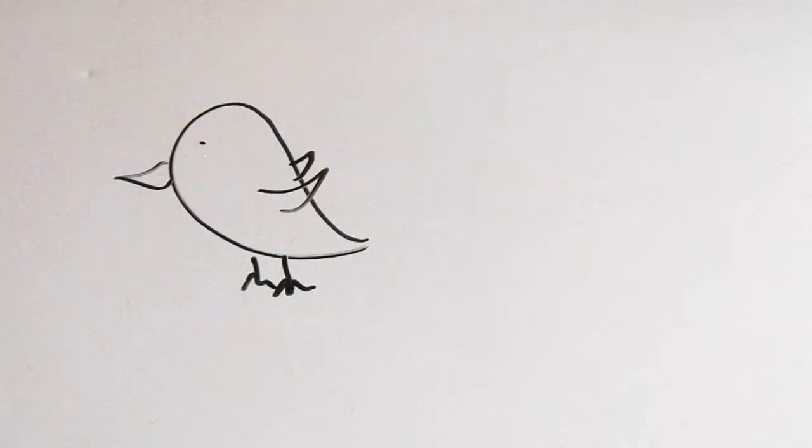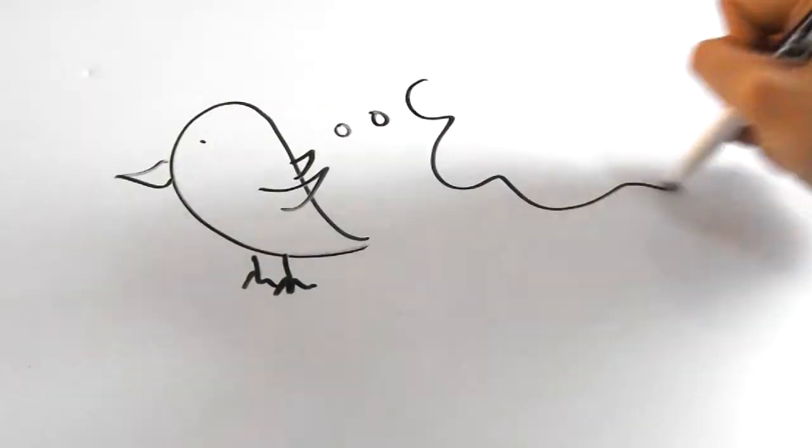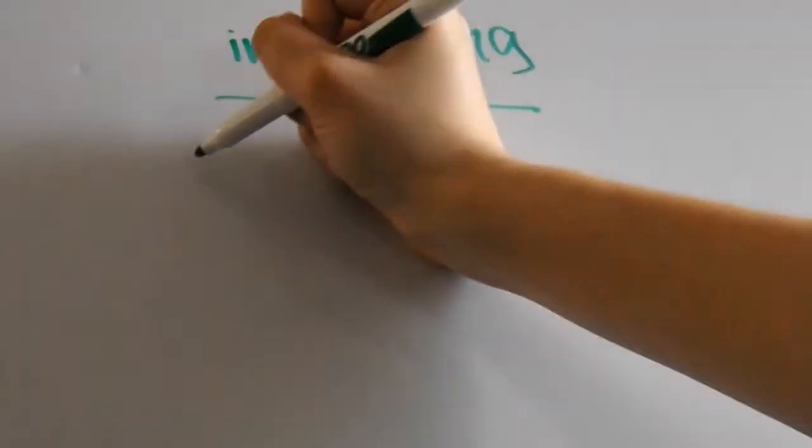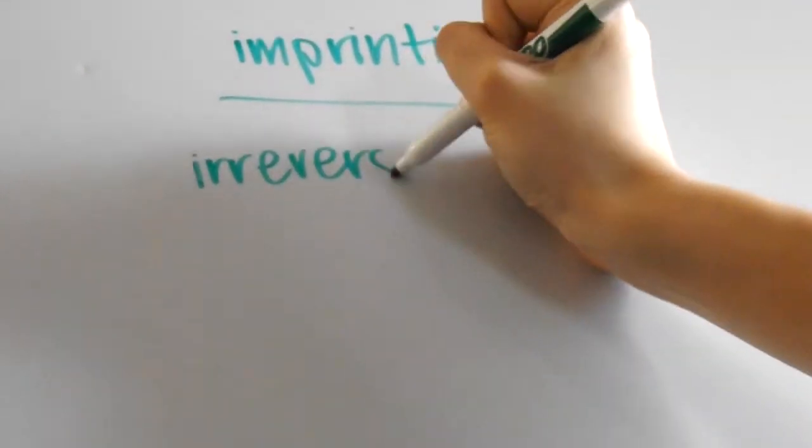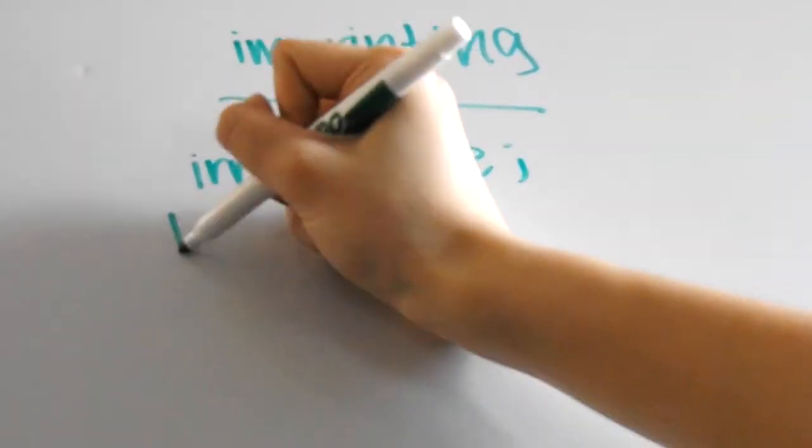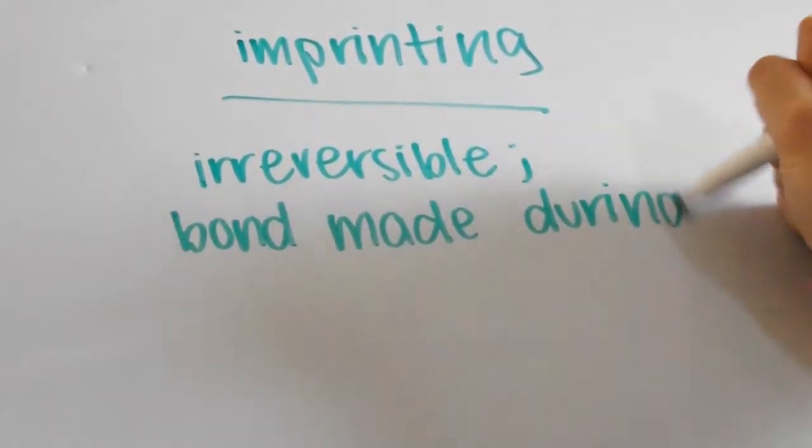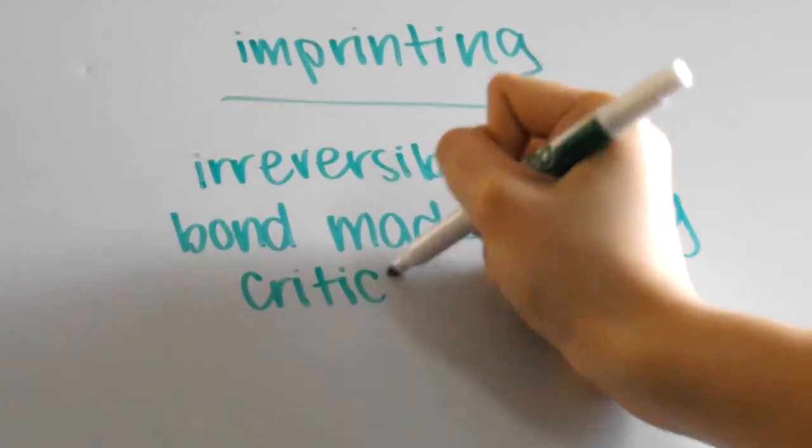By being the first thing that newly hatched ducklings saw, the ducklings followed him and thought that he was their mother for the rest of their lives. Through this, we see that imprinting is an irreversible process, and the bond that forms within that critical period must be made during that length of time, or else the imprinting won't be successful.